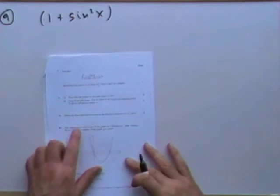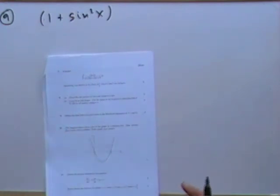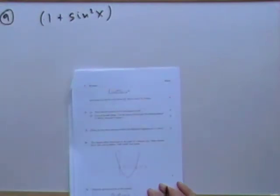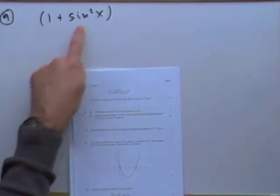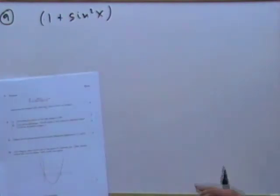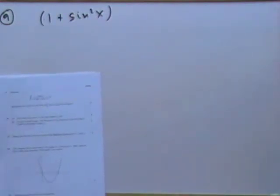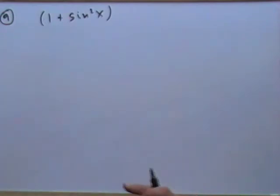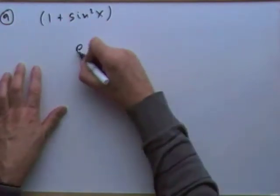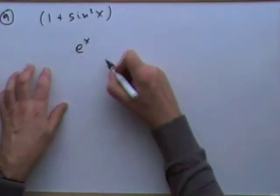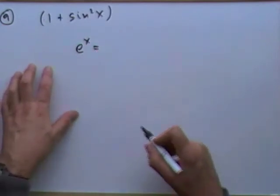Question nine: obtain the first three non-zero terms of the Maclaurin expansion. There are two ways: walk through the derivatives and find their values at zero, or if you remember the expansions for sin, cos and e, go straight into it algebraically. I'll do it the algebraic way first.